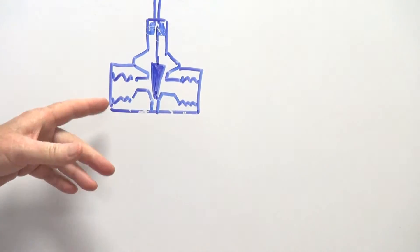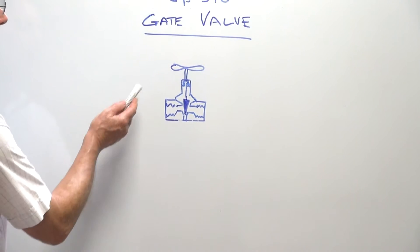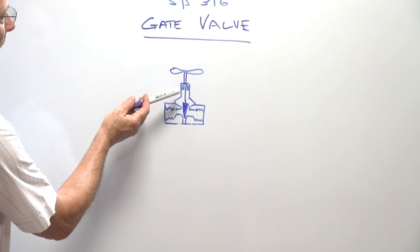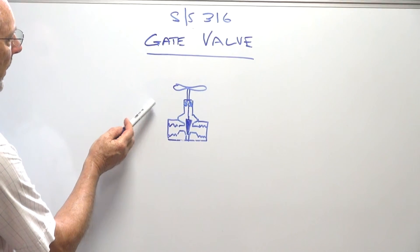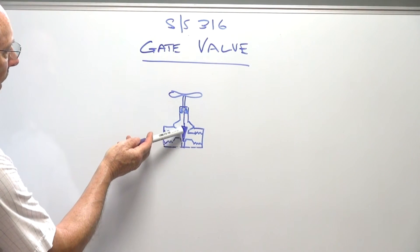I'll just show you on the sketch here. We've got the handle drawn like a propeller at the top, PTFE seating up in here, and the flow can go in either direction. This is the wedge gate which moves up and down in place.